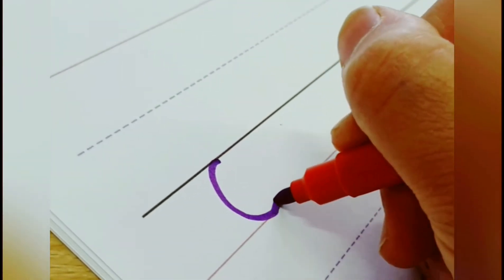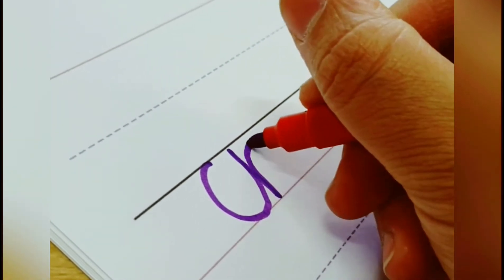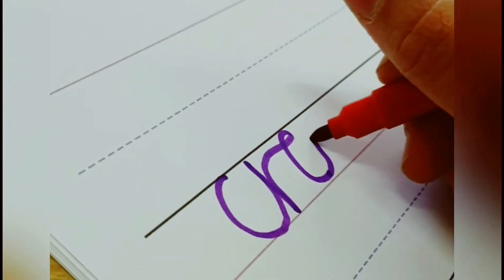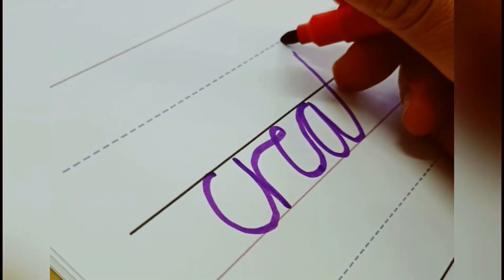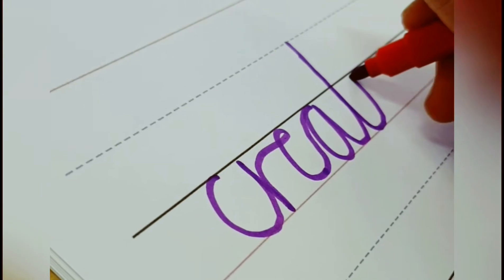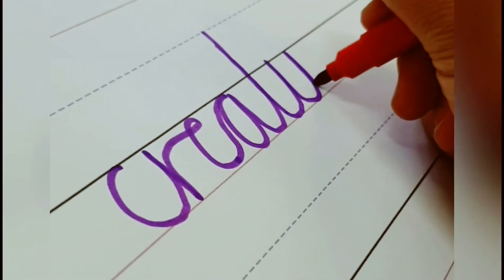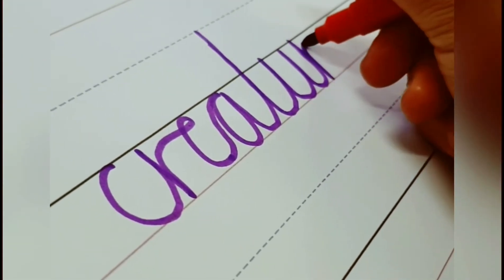First word is creature. C-R-E-A-T-U-R-E. A creature is an animal which is not a human being. Remember to take your T up to the top broken line and don't forget to cross your T.